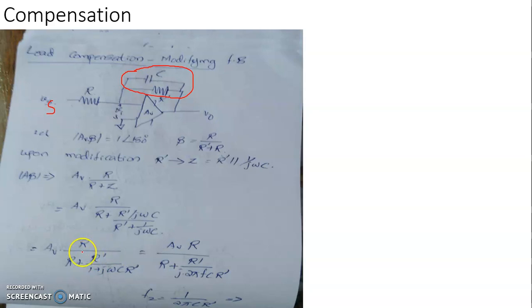This becomes Av times R divided by the denominator, which is R plus R prime divided by 1 plus jωCR prime. Now 1 by 2πCR prime—we simplify this frequency.